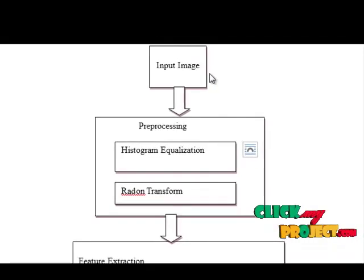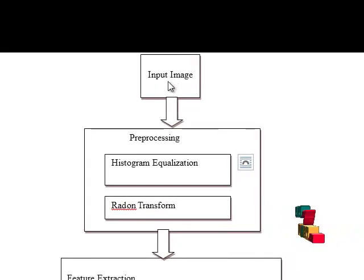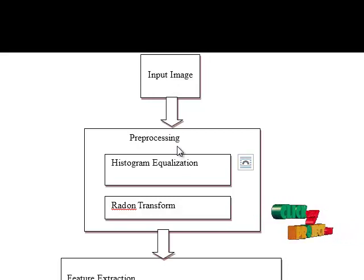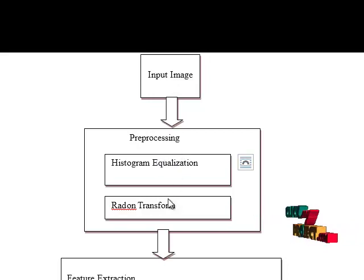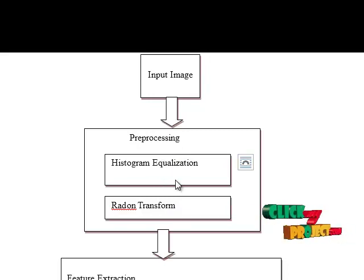This is the flow of our process. First, we load our input image. Then we apply preprocessing to the input image. Here we are using two techniques to preprocess our input image: histogram equalization and Radon transform.